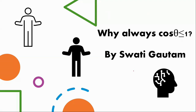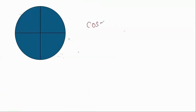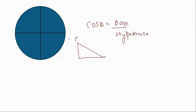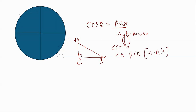How? We know that cos θ equals base over hypotenuse. Suppose I am drawing a right angle triangle ABC in which angle C is 90 degrees. If C is 90, then A and B are acute — that's the property of a right angle triangle. We know that in any right angle triangle the hypotenuse is the longest side; the slant side is the hypotenuse.